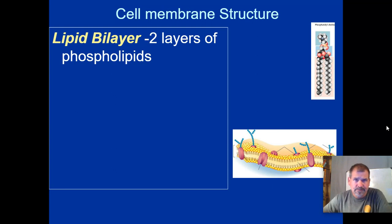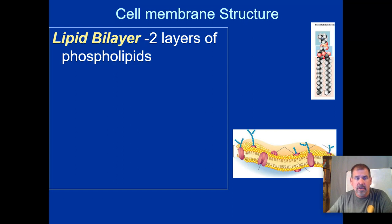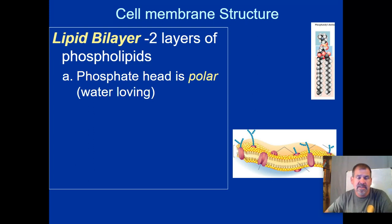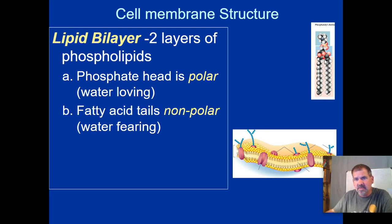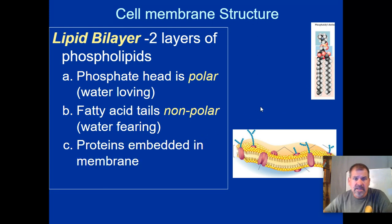The cell membrane is actually two very tightly packed layers called a lipid bilayer — two layers of phospholipids. A phospholipid has a phosphate head, which is polar and can bond with water molecules, and two fatty acid tails that are non-polar, like vegetable oil. There are also proteins, docking stations, and other chemicals embedded inside the cell membrane.